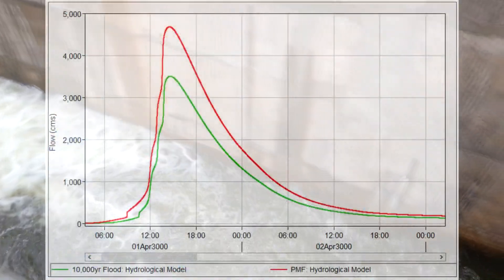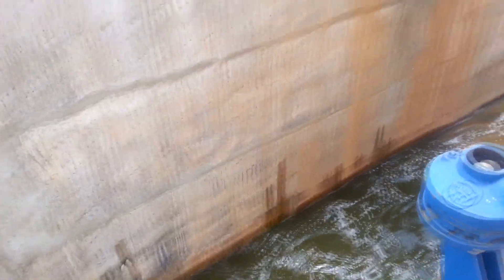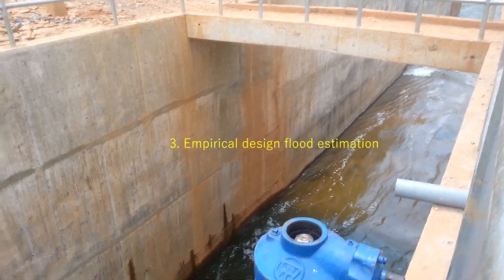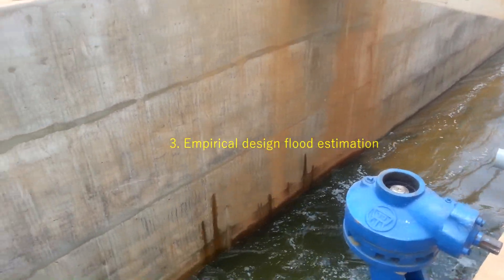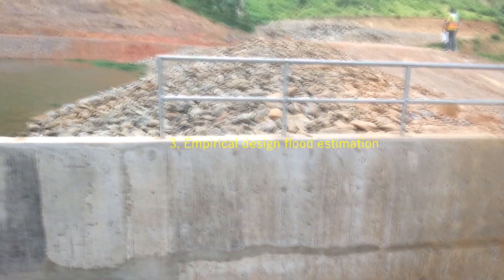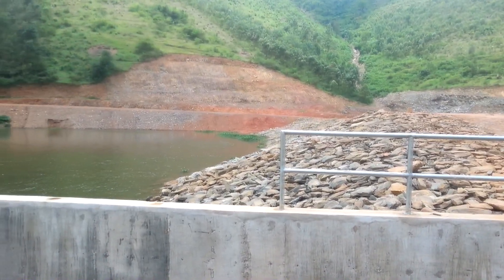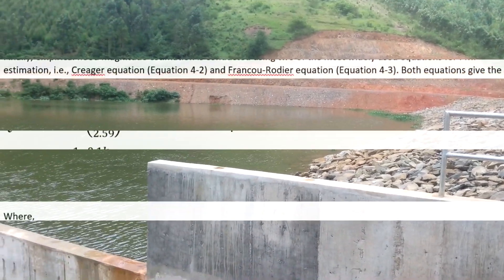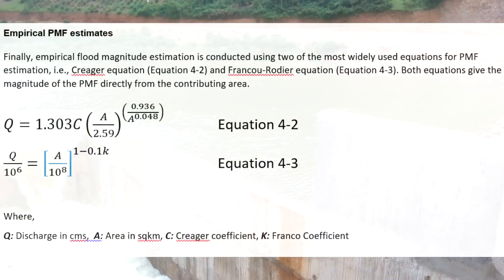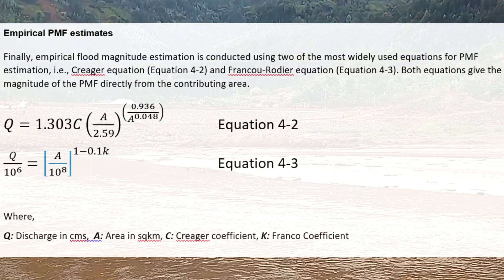Three, empirical design flood estimation — when there are neither flow nor precipitation records available, well-established empirical equations developed with experimental procedures could be employed. This method could also be used to cross-check estimations made by the other methods.